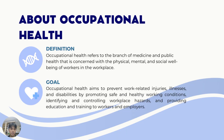First, about occupational health. The definition is: occupational health refers to the branch of medicine and public health that is concerned with the physical, mental, and social well-being of workers in the workplace. The goal of occupational health is it aims to prevent work-related injuries, illnesses, and disabilities by promoting safe and healthy working conditions, identifying and controlling workplace hazards, and providing education and training to workers and employers. It also involves the management of health and safety in the workplace, including identification and assessment of risk, the development of policies and procedures, and implementation of interventions to protect workers from harm.